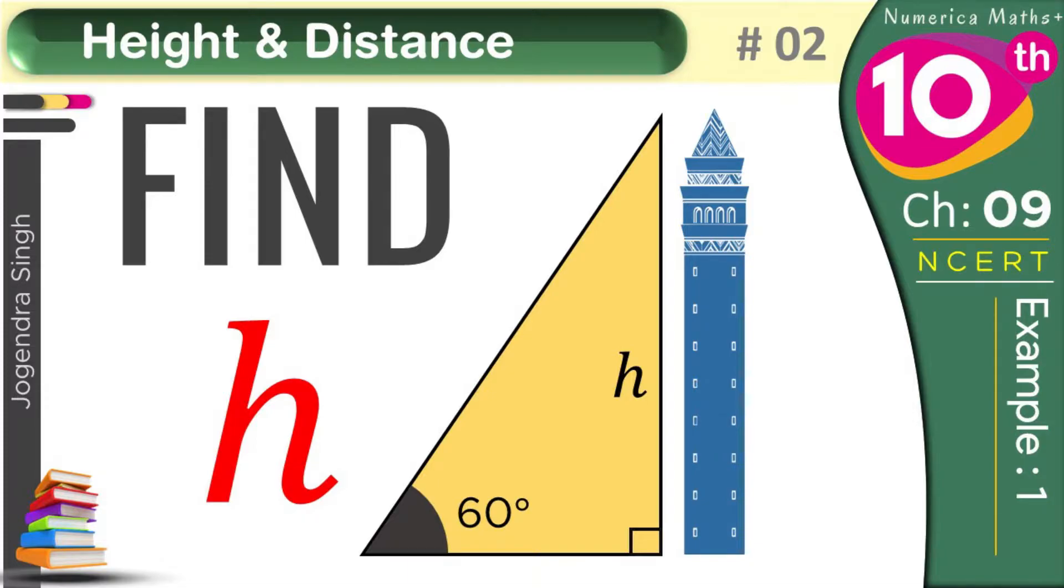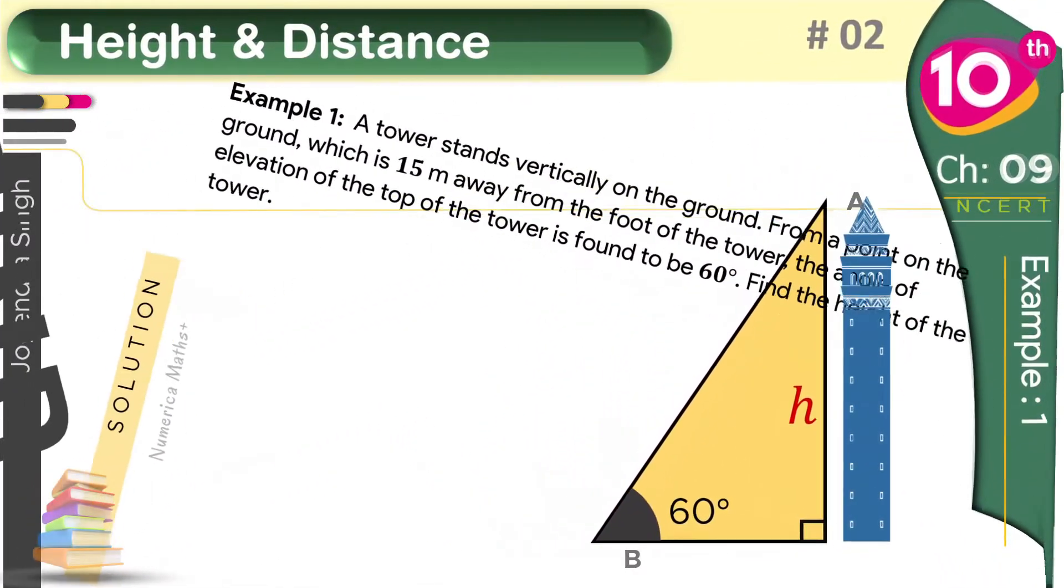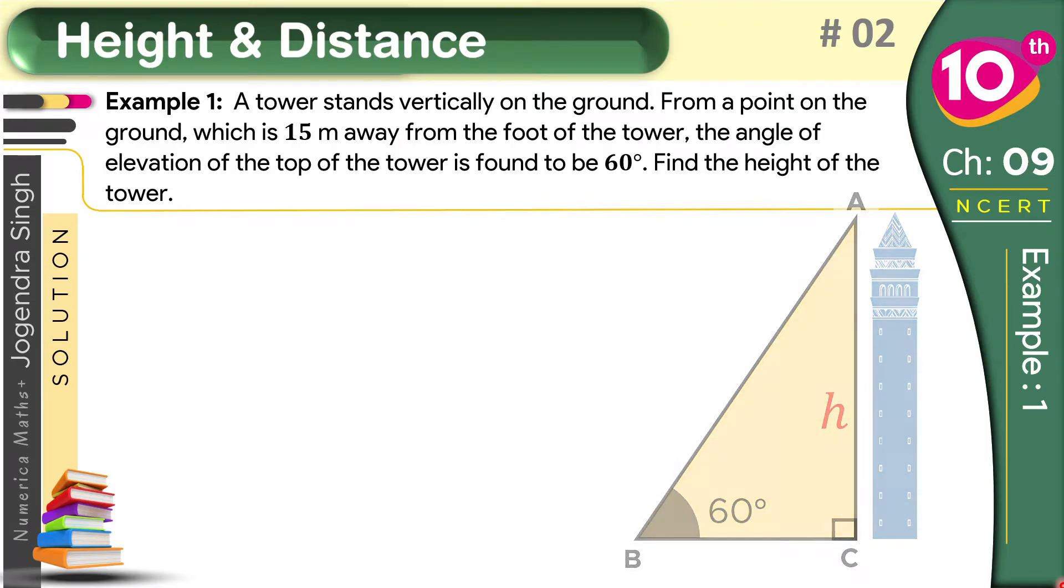So for solving this, just take aside all the things from here and this is our question. This question says: a tower stands vertically on the ground from a point on the ground which is 15 meters away from the foot of the tower. The angle of elevation of the top of the tower is found to be 60 degrees. Then you just have to find the height of the tower.